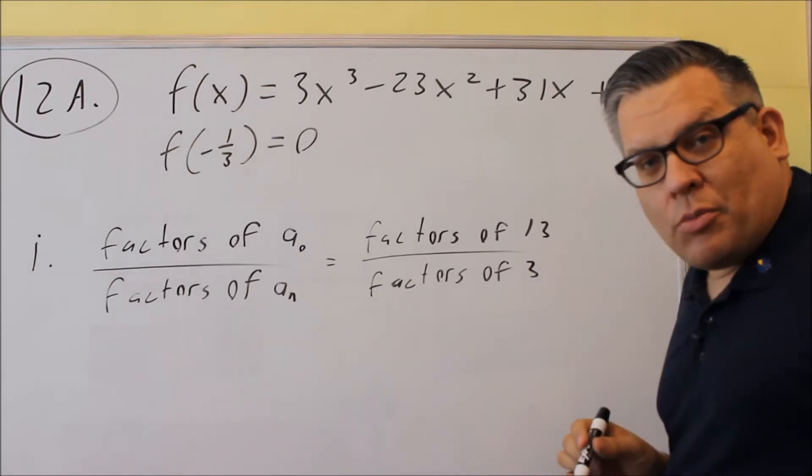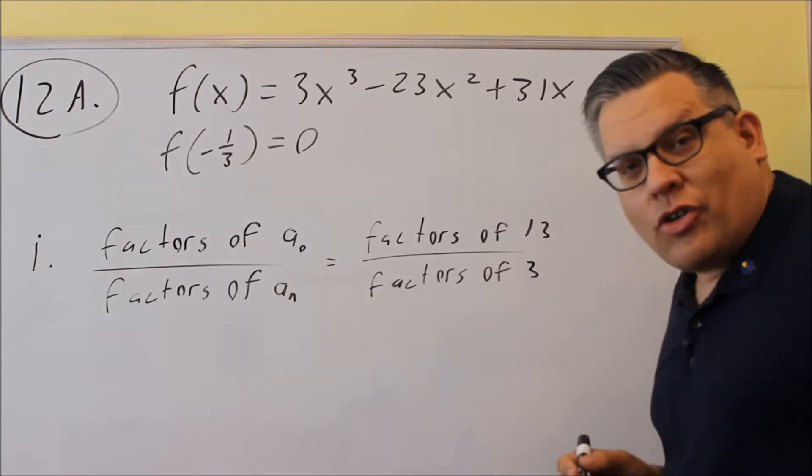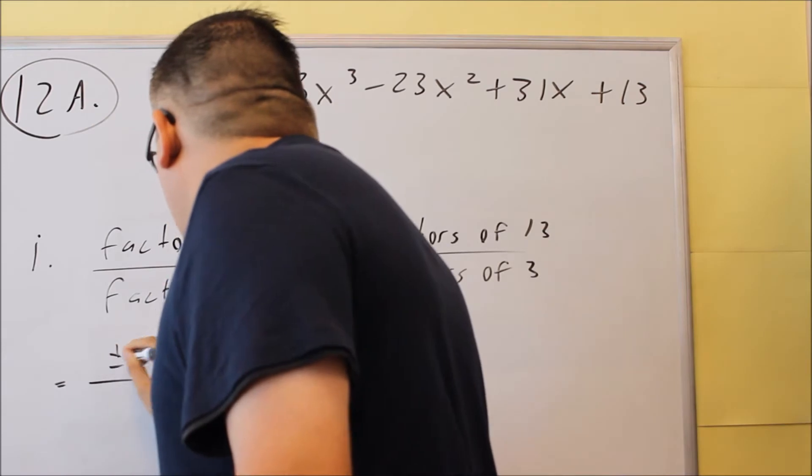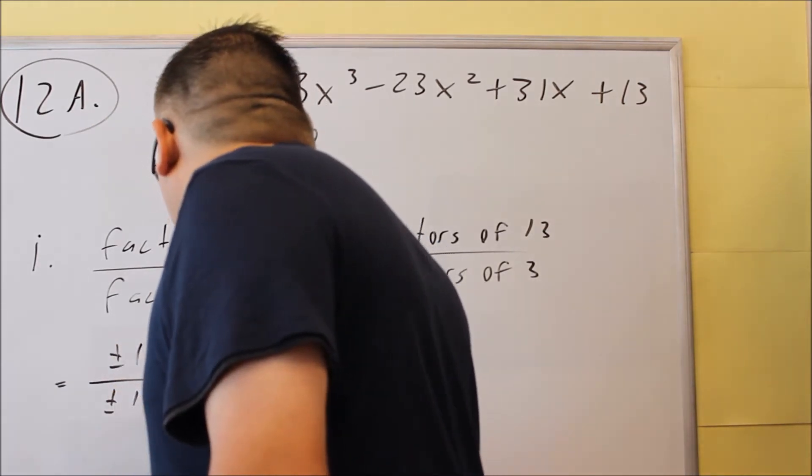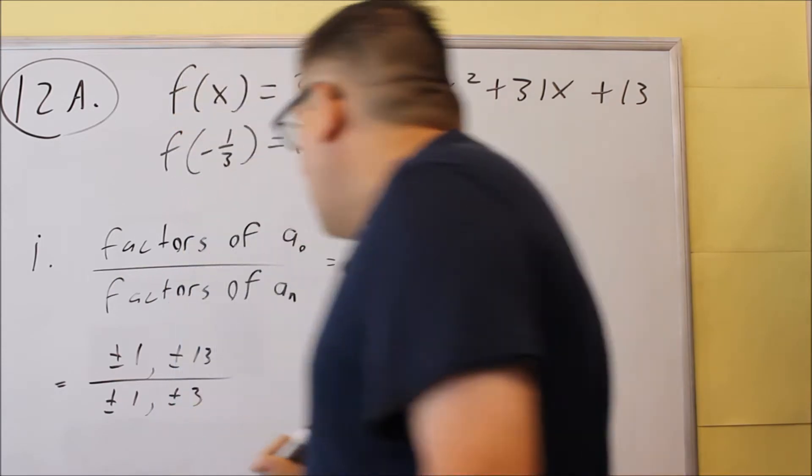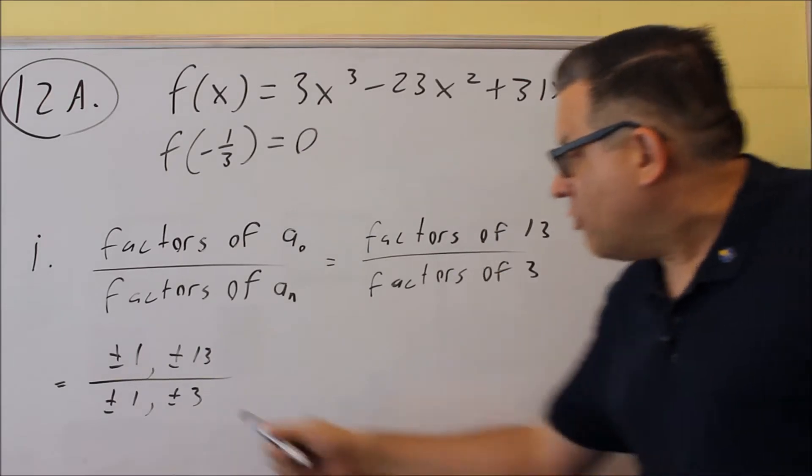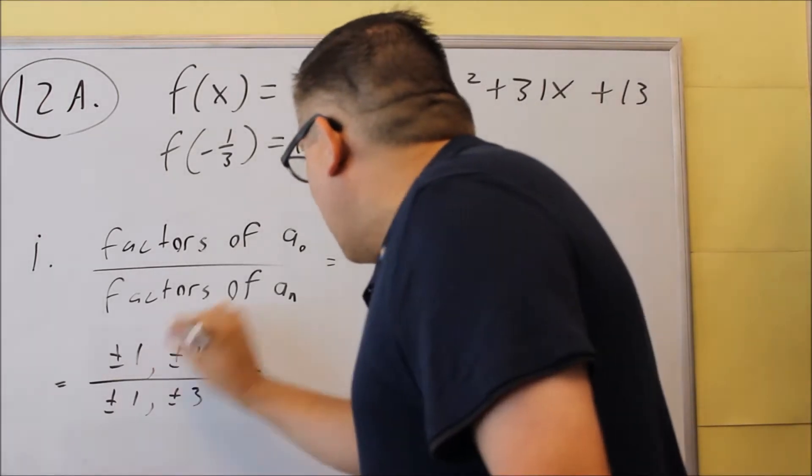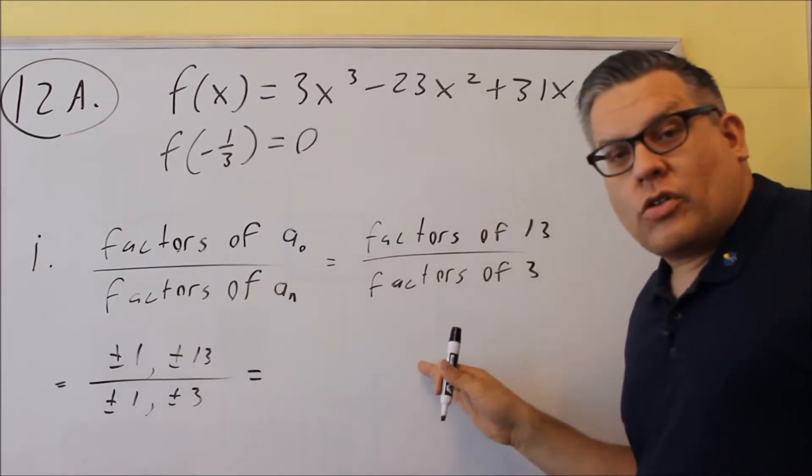Now both of these are prime numbers, which means that we're only going to have the number 1 and itself are going to be considered factors. So when we want to write that out, it's going to look like this, plus or minus 1, plus or minus 13. And on the bottom we have plus or minus 1, plus or minus 3. But we don't want to leave the answer like this because it's not a list. We want to expand this out and write a list.